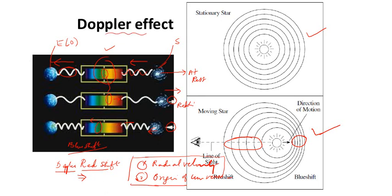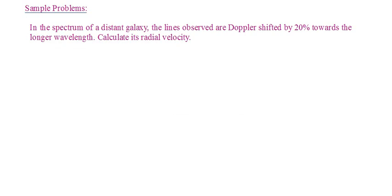The astrophysical relevance of Doppler effect is: first, it helps us measure the radial velocities of stars; and second, it gives answers to several questions regarding the origin of the universe, as the expanding theory and big bang are supported by it. Now let's attempt a sample problem. In the spectrum of a distant galaxy, the lines observed are Doppler shifted by 20 percent towards the longer wavelength — towards the red side. Calculate its radial velocity.